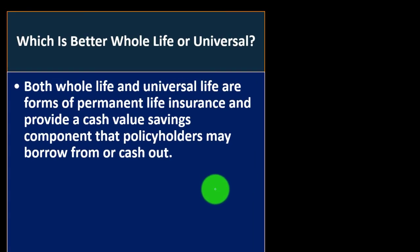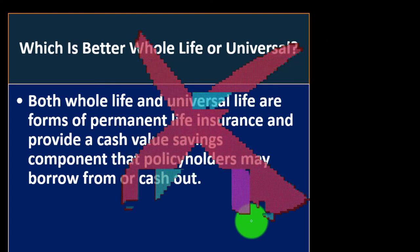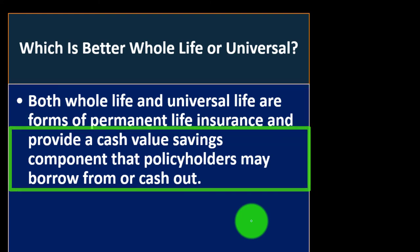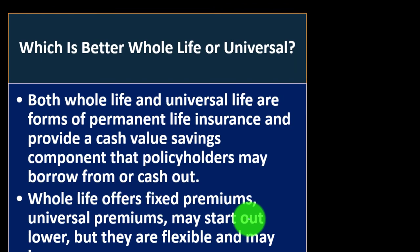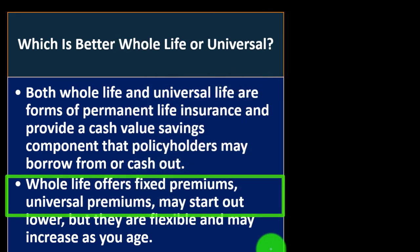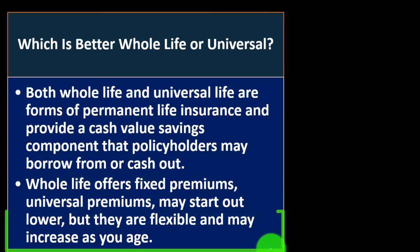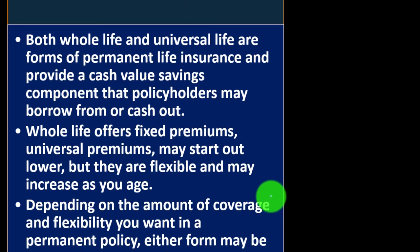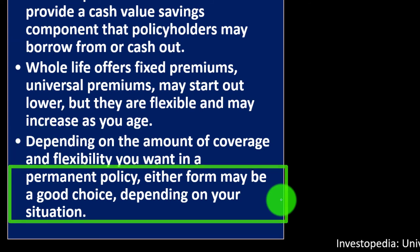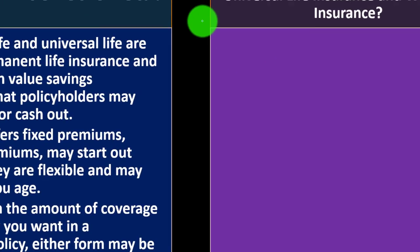Which is better — whole life or universal life? Both whole life and universal life are forms of permanent life insurance and provide a cash value savings component that policyholders may borrow from or cash out. Whole life offers fixed premiums, while universal life premiums may start out lower but are flexible and may increase as you age. Depending on the amount of coverage and flexibility you want in a permanent policy, either form may be a good choice depending on your situation — it depends.